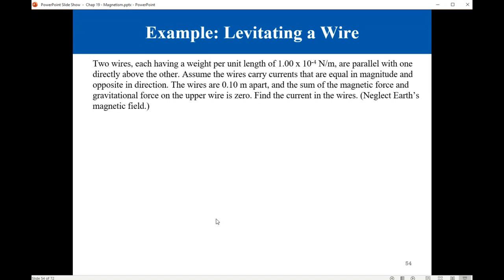This means the magnetic force is upward and the gravitational force is downward. They are equal in magnitude, opposite in direction, so they cancel each other. Find the current in the wires.